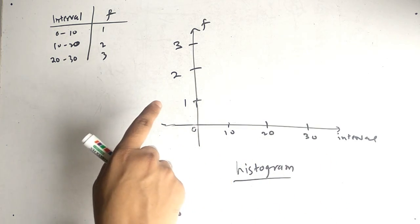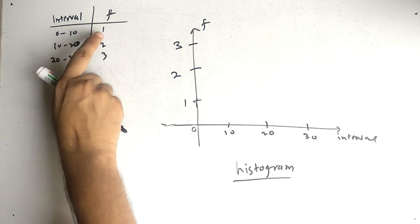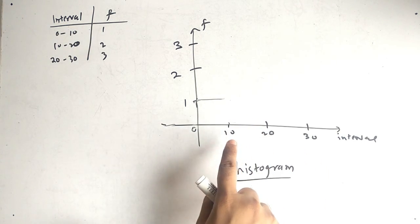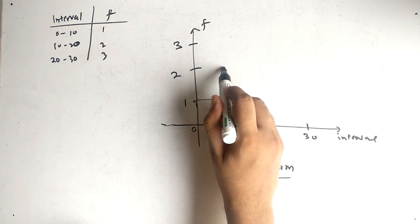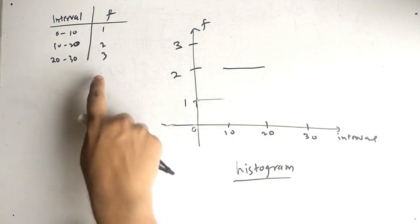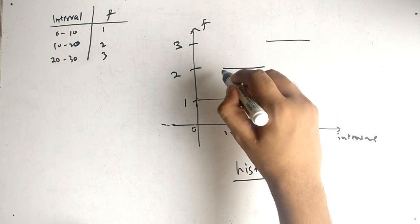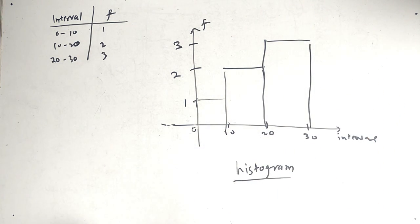The Histogram has frequency on the y-axis and interval on the x-axis, so we write the values 0, 10, 20, 30 on the x-axis and 1, 2, 3 on the y-axis. From 0 to 10 we draw a bar of height 1, from 10 to 20 a bar of height 2, and from 20 to 30 a bar of height 3. Then draw vertical lines to complete the histogram.